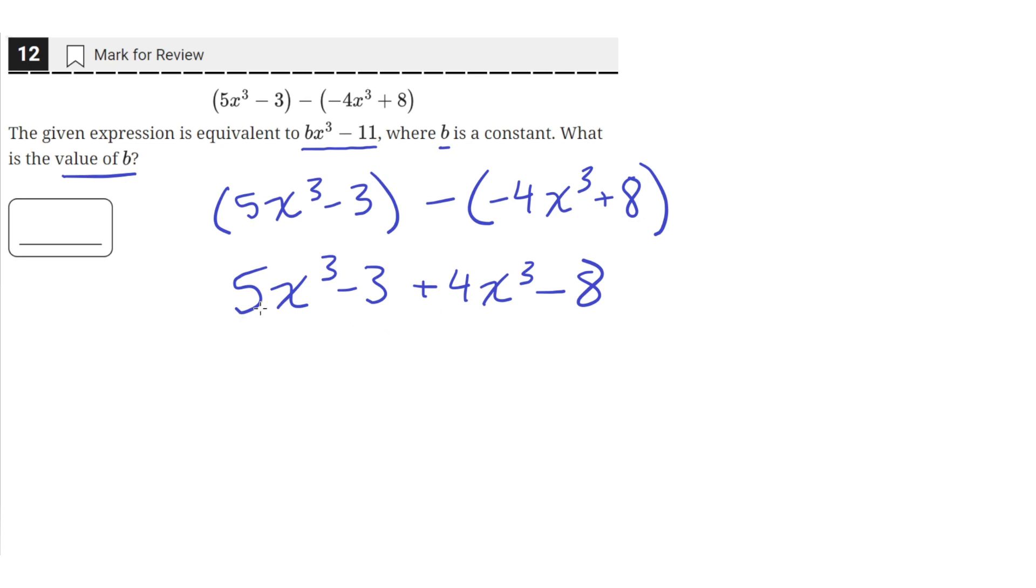So now let's just combine like terms. So these two terms both have an x cubed, so 5 plus 4 is 9x cubed, and then negative 3 minus 8 is just negative 11.